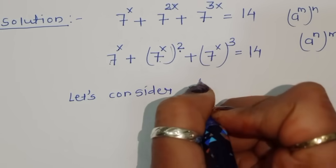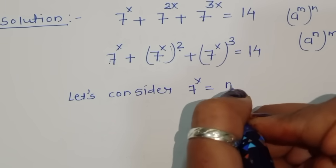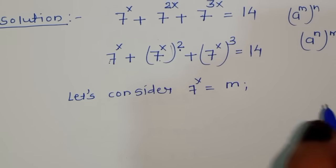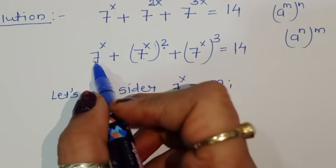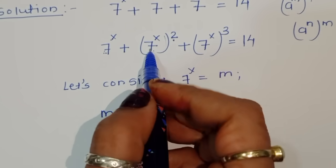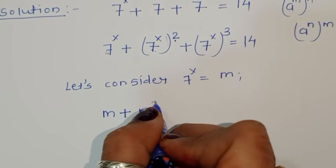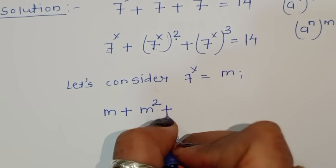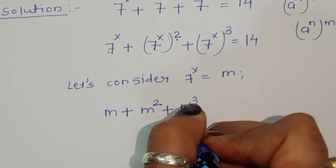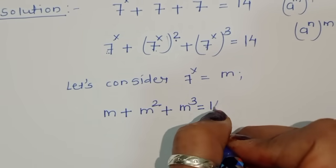Let m = 7^x. Then the equation becomes m + m² + m³ = 14.